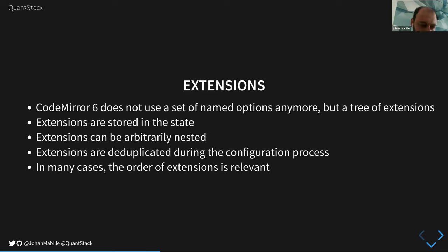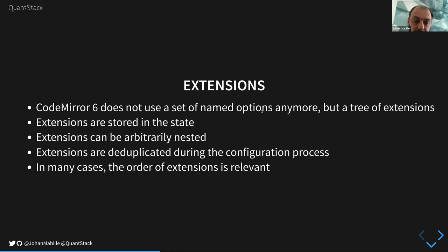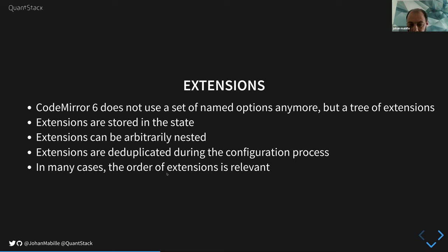In CodeMirror 6, a lot of things have been pulled out and you need to use extensions to set up different features. There are no more named options like we had in the previous version. We now have a tree of extensions. These extensions can be stored in the state, can be arbitrarily nested, and you can have the same extension appearing in different parts of the tree — the configuration process will use deduplication. In many cases the order of extensions is relevant, which can be problematic when you want to enable or disable extensions on the fly.